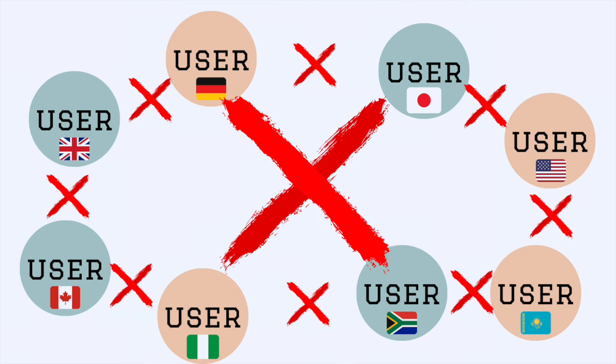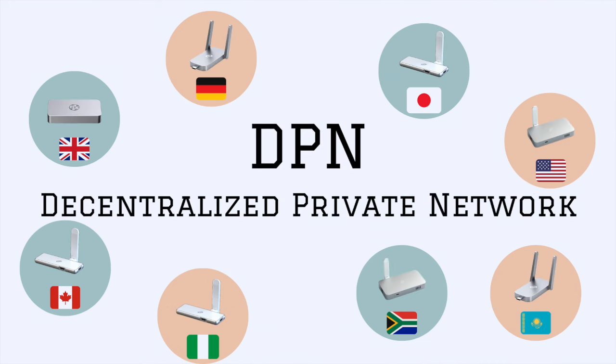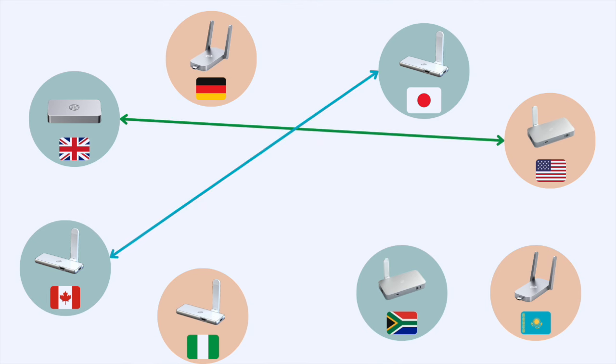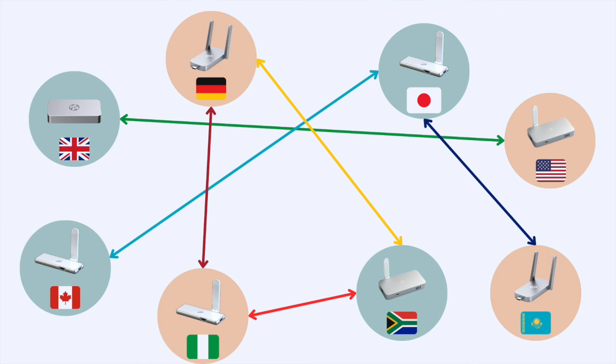You can't do that without an additional paid service. With the deeper network and their decentralized private network, you can now do that. Any user from around the world with a node can access any other user from around the world with a node. So a user in Canada can now use Japan's internet. A user in America can use internet from the United Kingdom. Every country is now connected to every other country.